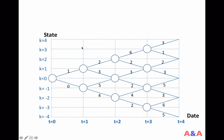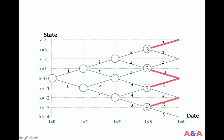At date 3, if you are in state 3, you would choose up — that way you can get 3. At date 3, if you are in state 1, you would choose down to get 3. If you are in state negative 1, choose up to get 5. Finally, if you are in state negative 3, you would choose up to get 6.